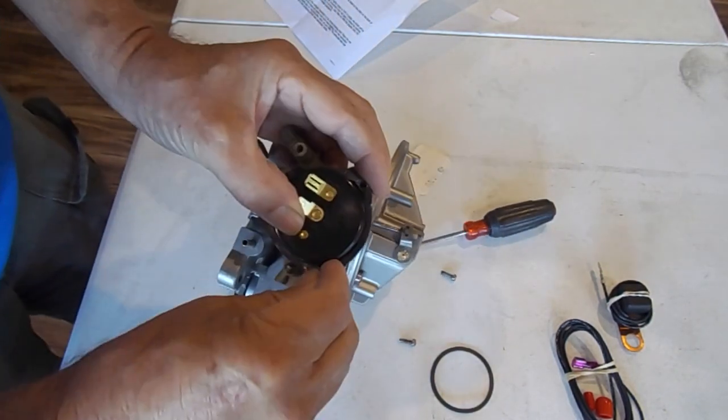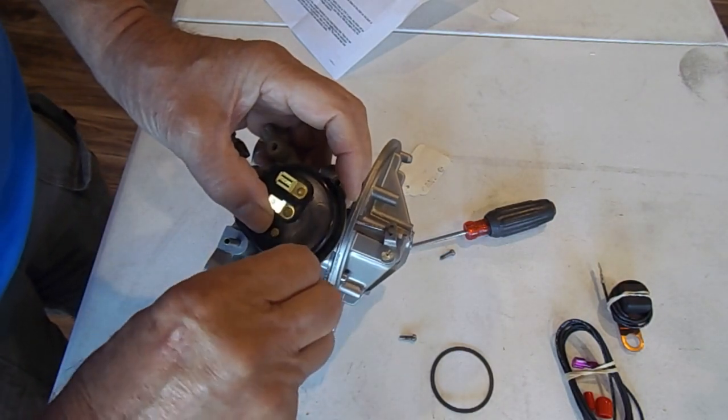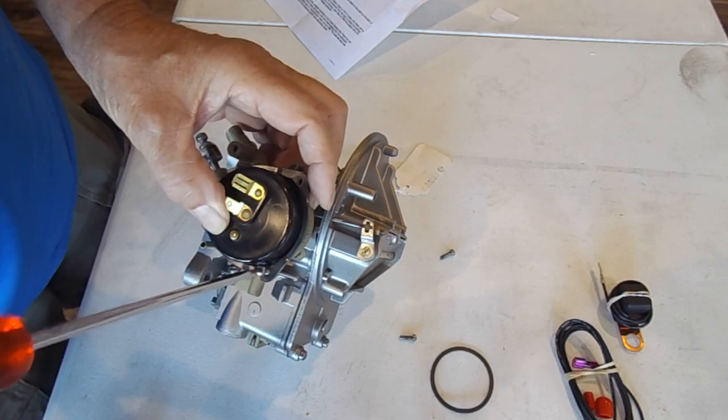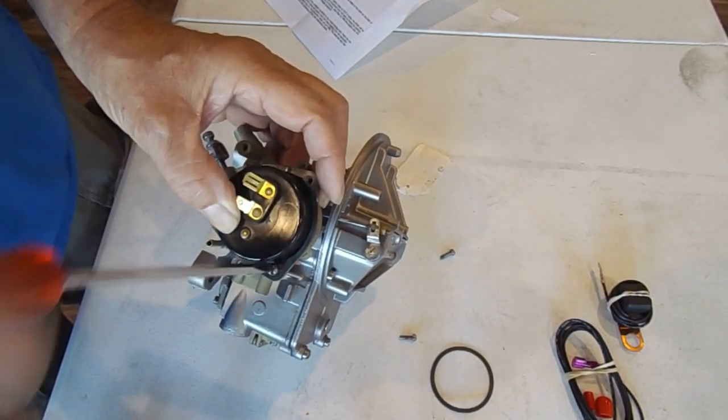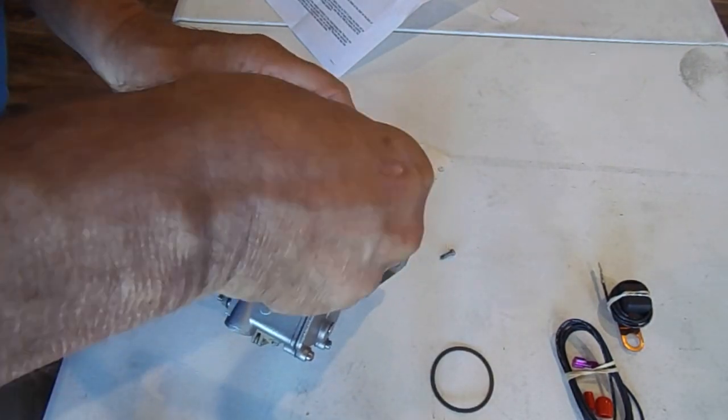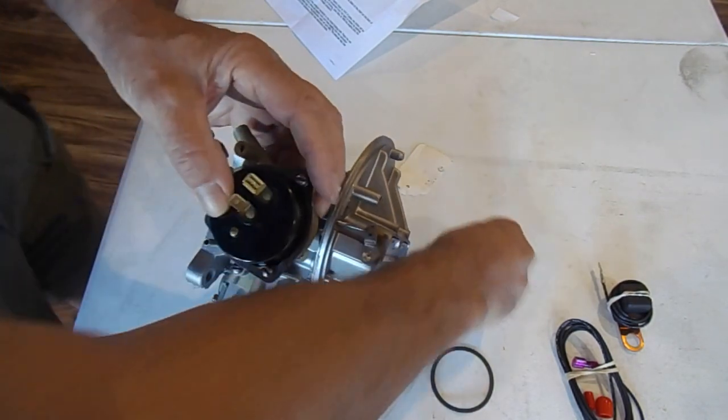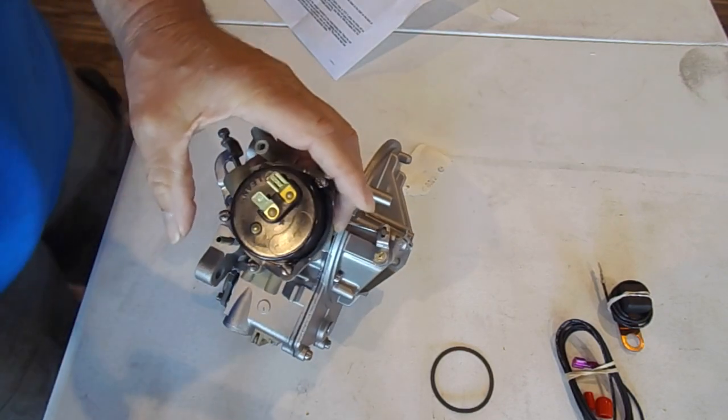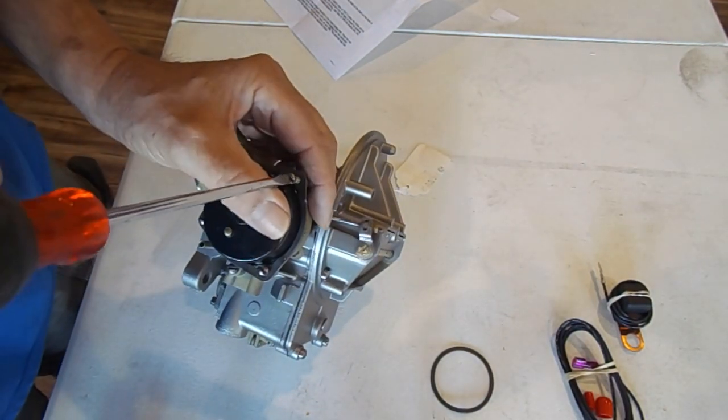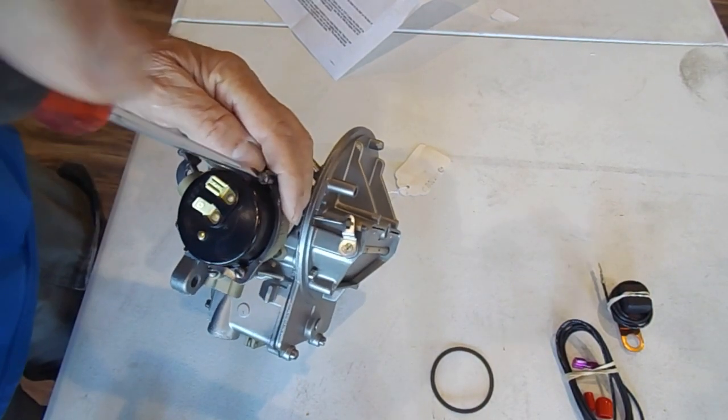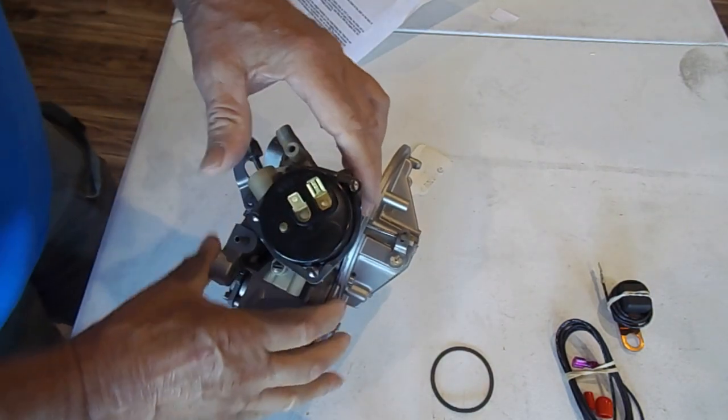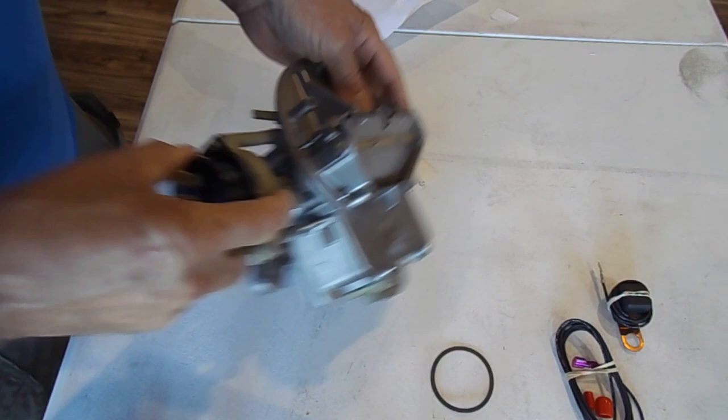Now, on the original choke for this carburetor, this ring acted as the ground because the thermostat had a metal band on it. And in this case, the ground is going to come from our little thermostat, or rheostat, whatever you want to call it, that's going to be connected to the manifold. So this has three screws. And by the way, this does come with some really good instructions, so be sure to read those.